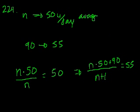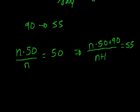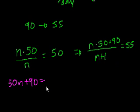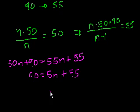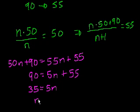Now we just have to solve for n. We get 50n plus 90 equals — multiplying both sides by n plus 1 — 55n plus 55. Subtracting 50n from both sides: 90 equals 5n plus 55. Subtracting 55 from both sides: 35 equals 5n, so n equals 7. And that's choice E.